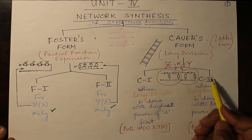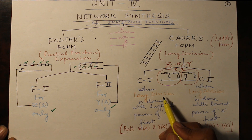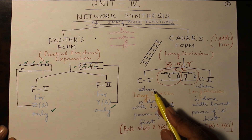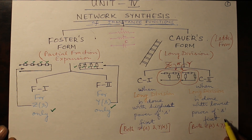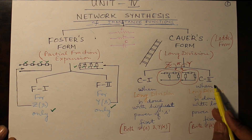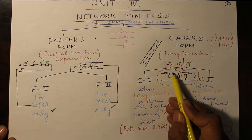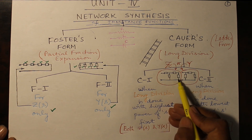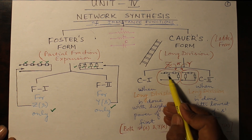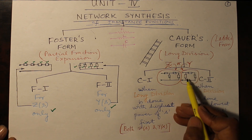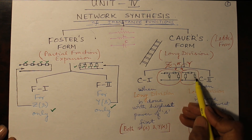Both C1 and C2 forms use long division. When long division is done with the highest power of S first, it is known as C1 form, and when done with the lowest power of S first, it is known as C2 form. This is applicable for both Z and Y. At realization, if you start with a Z function, you get a network arranged as Z, Y, Z, Y. For admittance functions, it begins as Y, Z, Y, and so on.